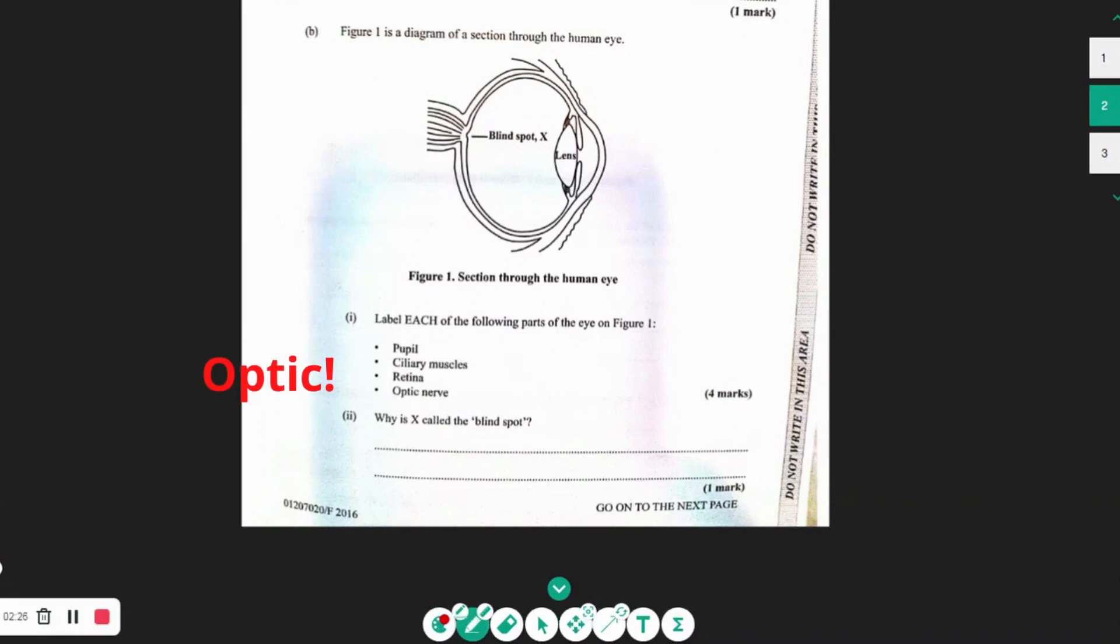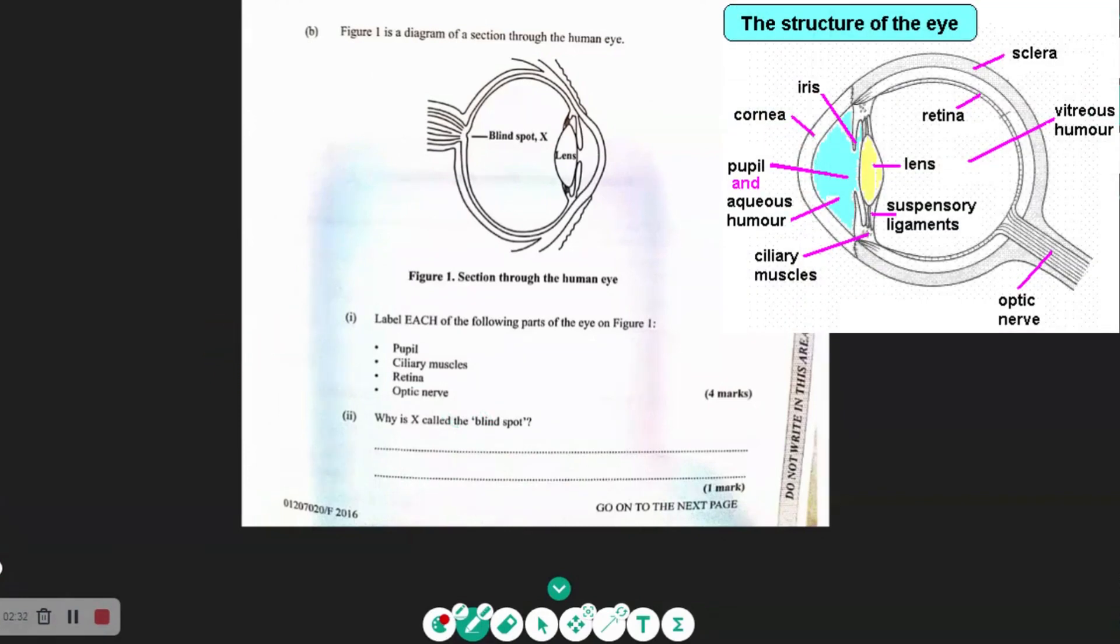So they want us to label the pupil, the ciliary muscles, the retina, as well as the optical nerve. So where exactly is the pupil? Let's label that. So we have this here would be the pupil. So I'll just put P. So this would be our pupil.